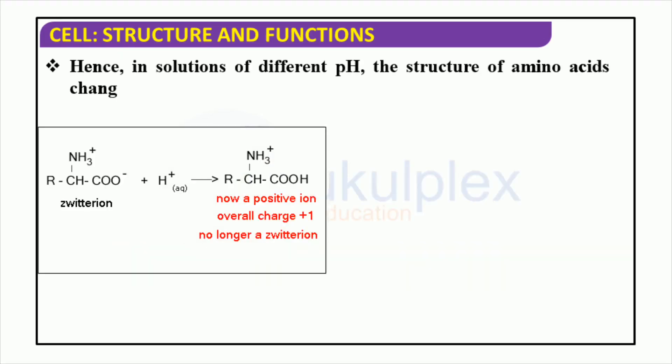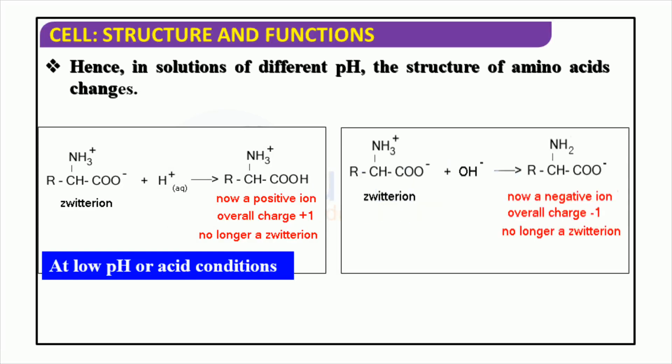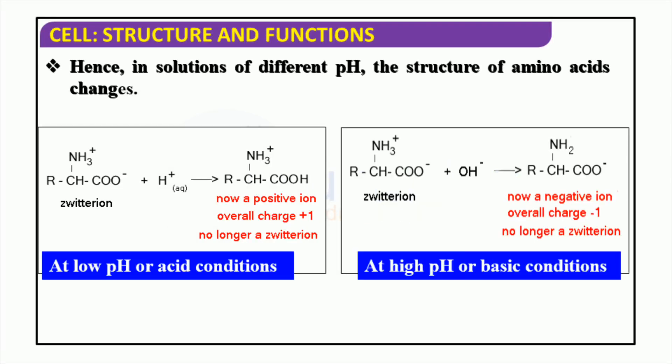Amino acids can exhibit different behavior depending on the pH of the surrounding environment. When an acid is applied to an amino acid, the molecular structure alters at acidic pH levels. Similarly, if a base is added to an amino acid, its structure also changes in higher pH or basic conditions. As a result, the structure of amino acids may vary when placed in solutions with different pH levels.